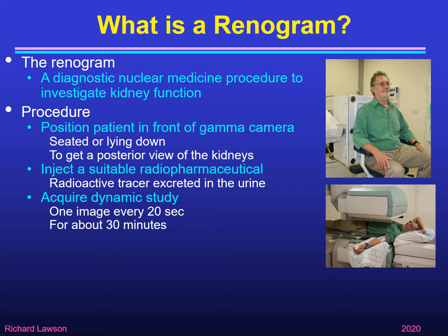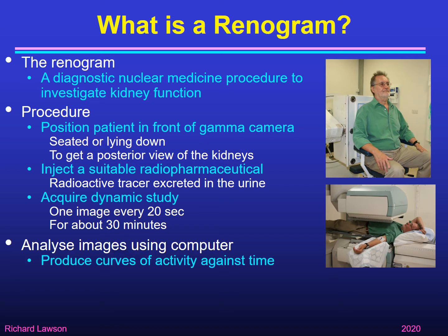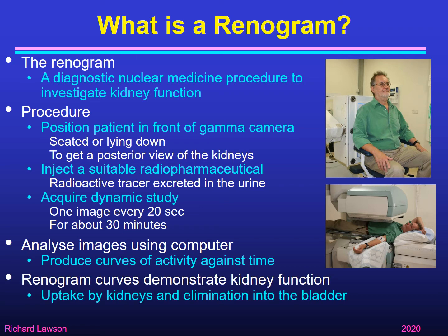We acquire a dynamic study, typically one image every 20 seconds with the gamma camera for about 30 minutes. Then we analyze those images using the computer to produce curves of activity against time, showing how the activity passes through the kidneys. So the renogram curves demonstrate kidney function, both uptake by the kidneys as well as elimination into the bladder.